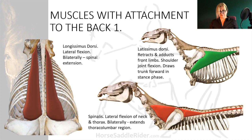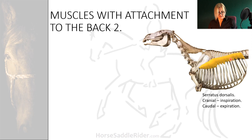Serratus dorsalis is another muscle sited directly under the rider and is involved with breathing. This is how a heavy or unbalanced, unskilled rider can impact on a horse's breathing, reducing time to fatigue.